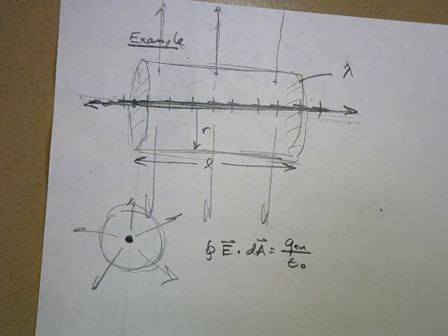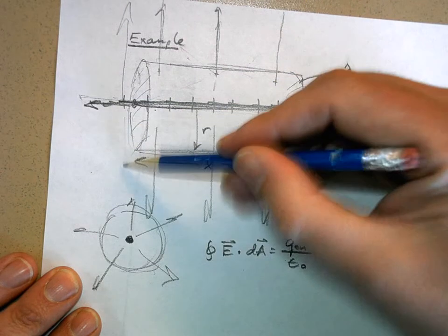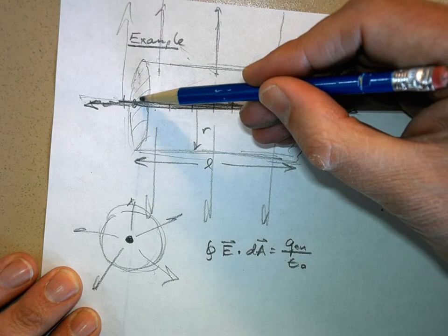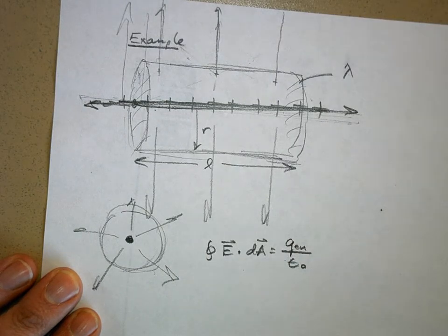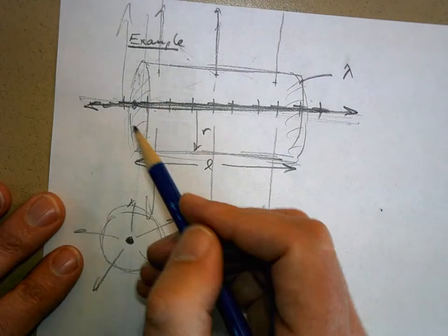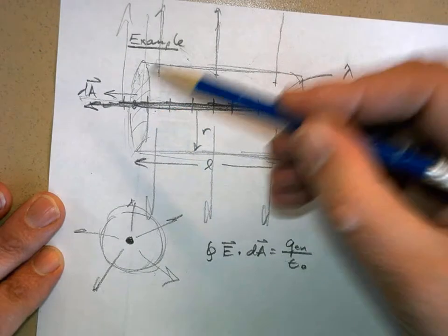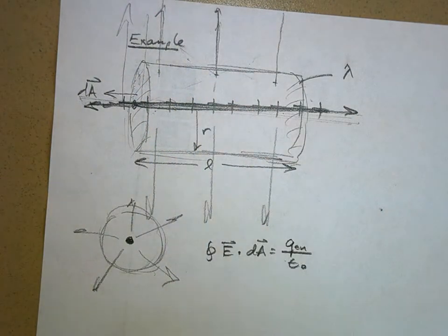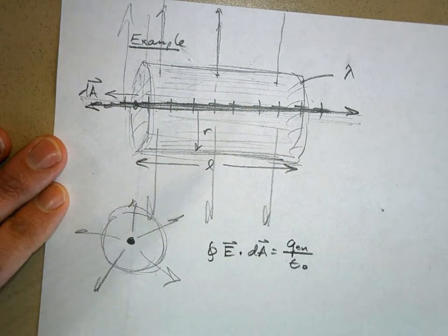You don't need to include the end caps because there is no electric flux going through them. The electric flux lines are parallel to the end cap surfaces, so the area vector for the end caps is perpendicular to the electric field — e·da = e·da·cos(90°) = 0. So only the curved outer surface contributes.